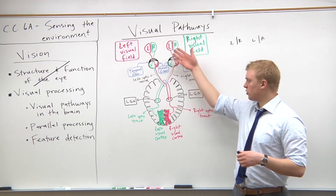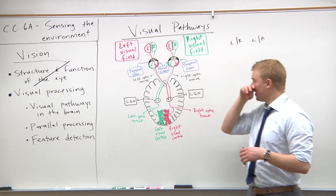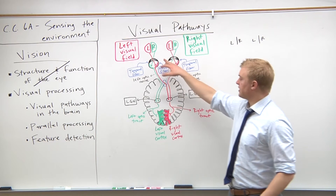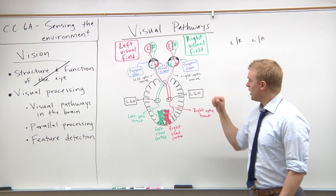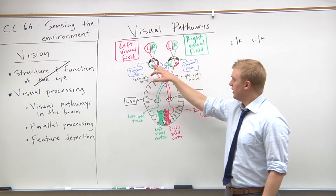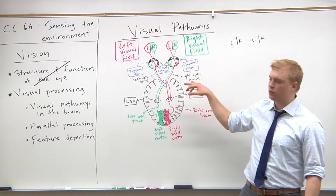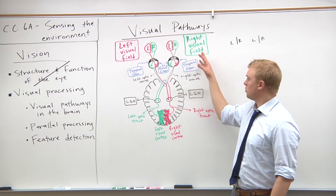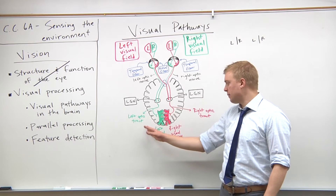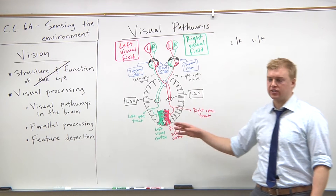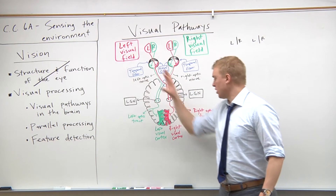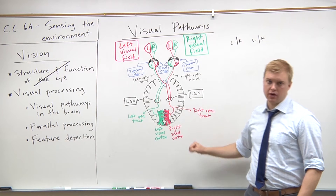Looking at a transverse lateral cut of the brain and the eyes, we're going to follow this signal. Each eye has a left and a right visual field. The left visual field for each eye is projected to the right side of the retina, and the right visual field is projected to the left side of the retina. The right visual field will eventually be processed on the left hemisphere — the left visual cortex of the occipital lobe — and everything from the left visual field will be processed on the right hemisphere, the right visual cortex of the occipital lobe.